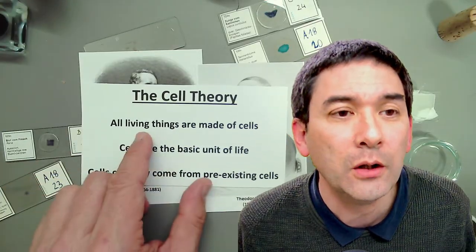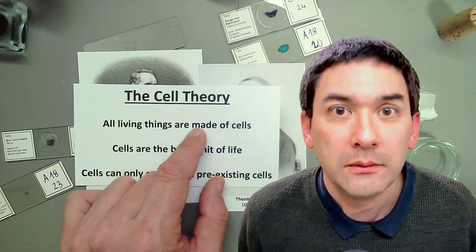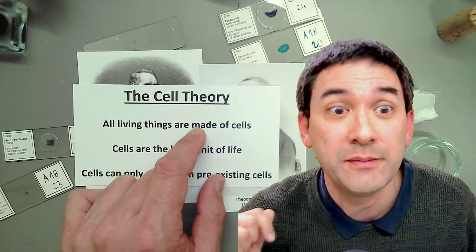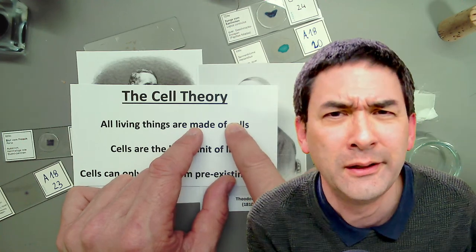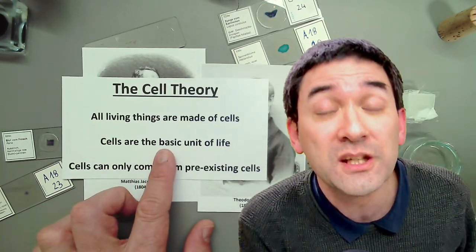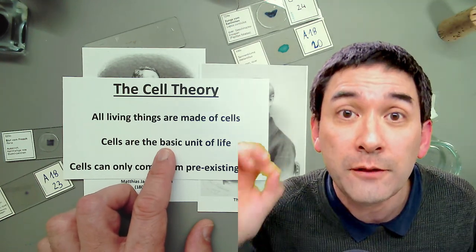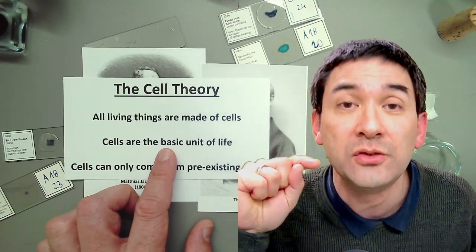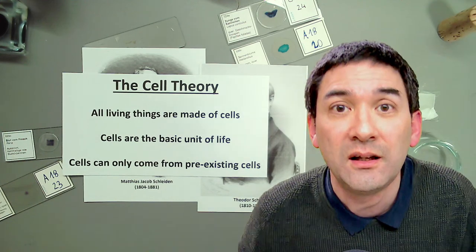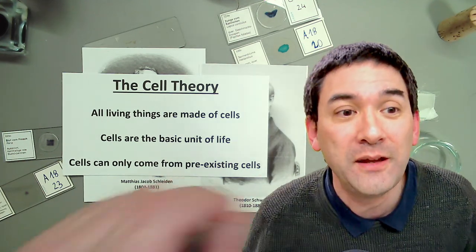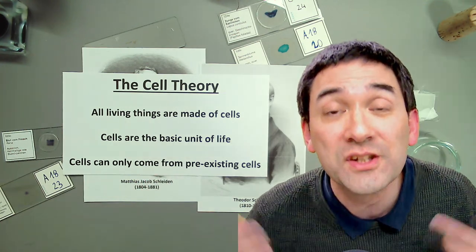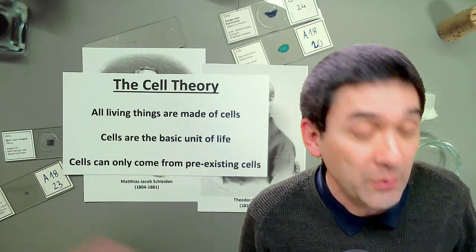The cell theory has three parts. First: all living things are made of cells — all of them, past, present, and future. Second: cells are the basic unit of life — you need at least one cell for something to be considered alive; subcellular structures per definition are not alive even if they move. Third: cells can only come from pre-existing cells — which of course raises the chicken-and-egg problem of where the very first cells came from.